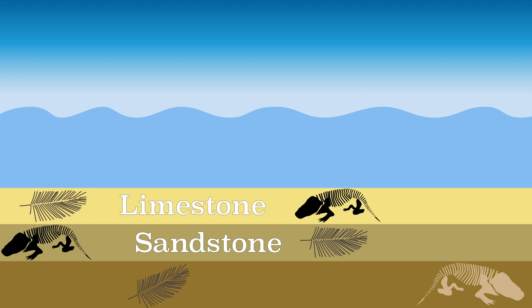Sandstone, as the name suggests, mainly consists of grains of sand that have been deposited. Limestone is formed by an accumulation of marine organisms.